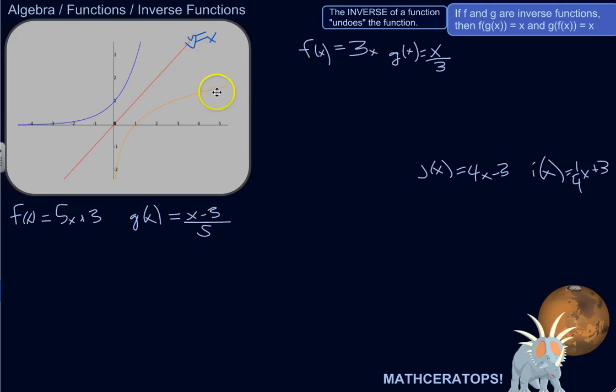And we're taking the y values of this function and making them the x values of this function. So they undo each other.